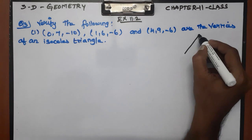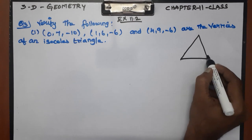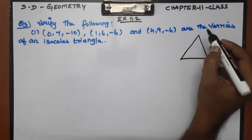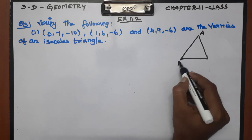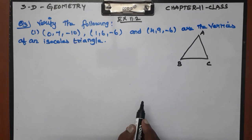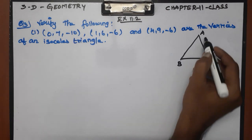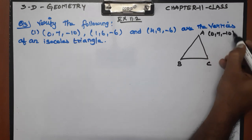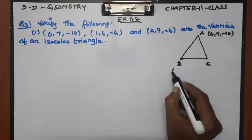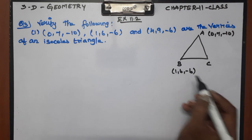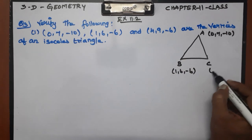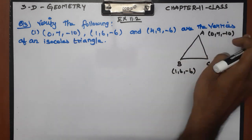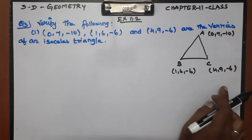We have 3 points, so we label them A, B, C. Point A is (0, 7, −10). Point B is (1, 6, −6). And point C is (4, 9, −6). We need to verify it is an isosceles triangle.